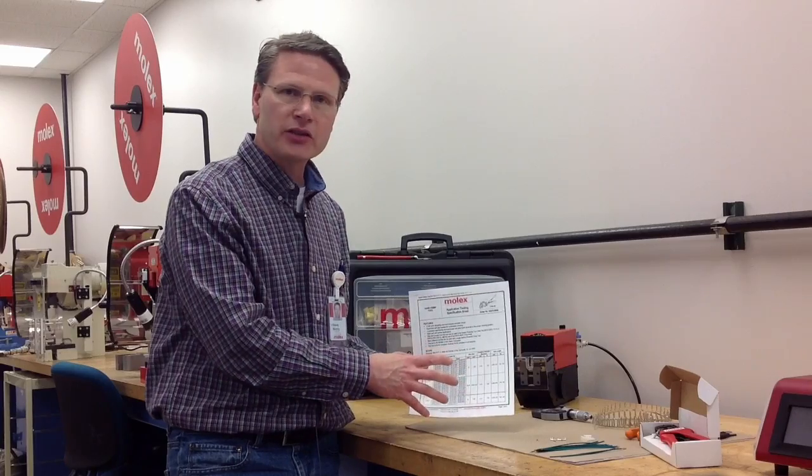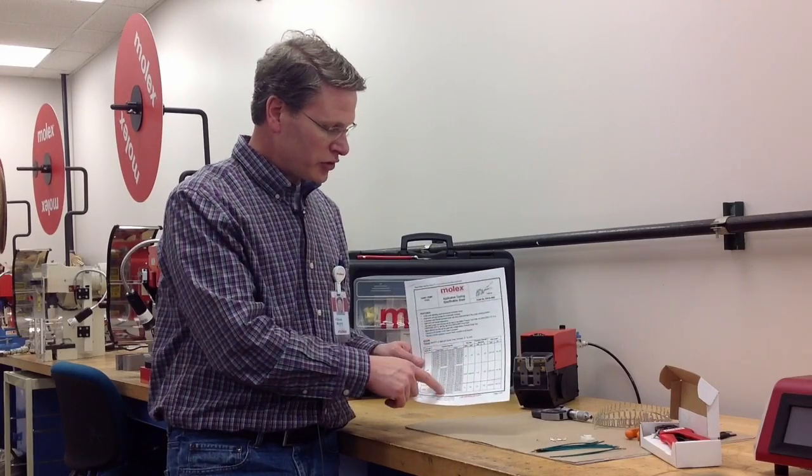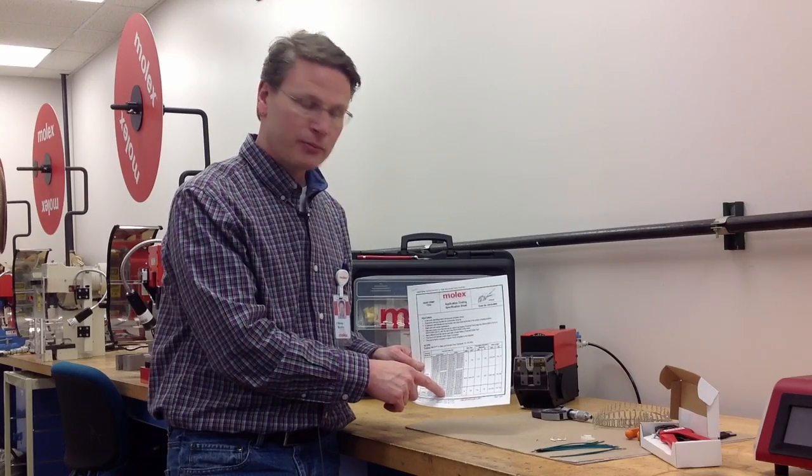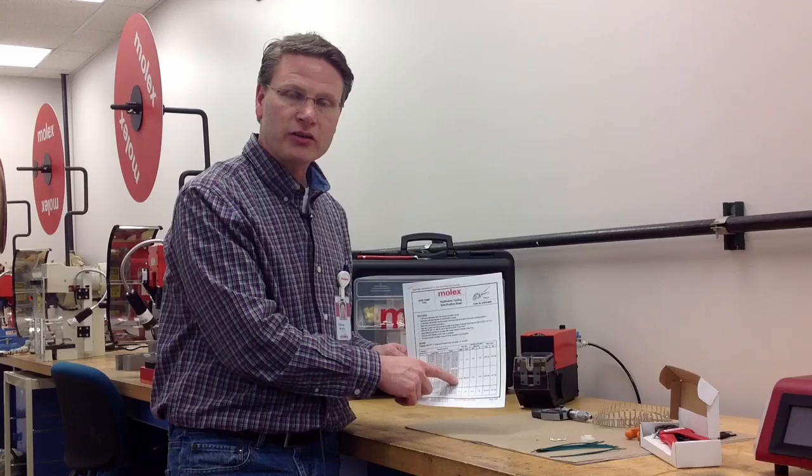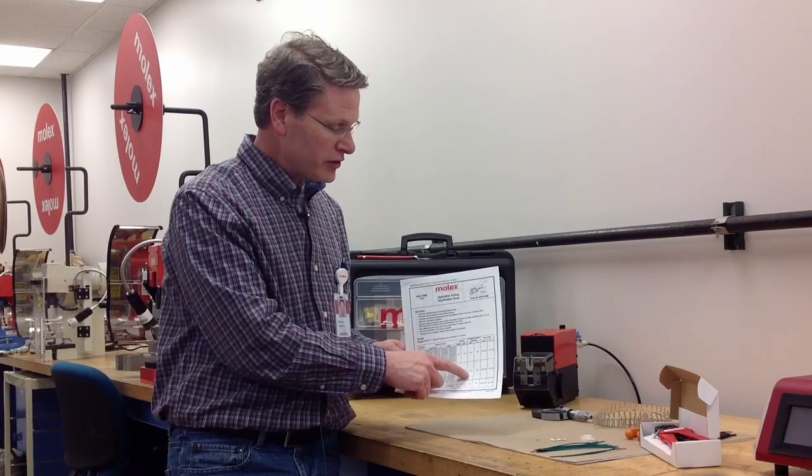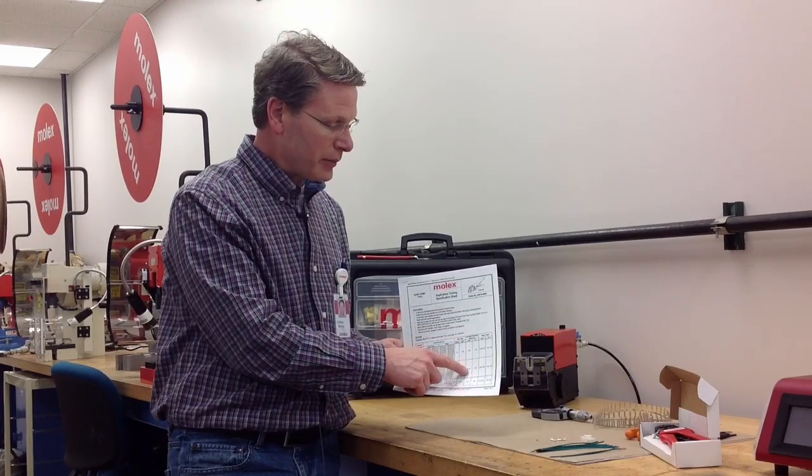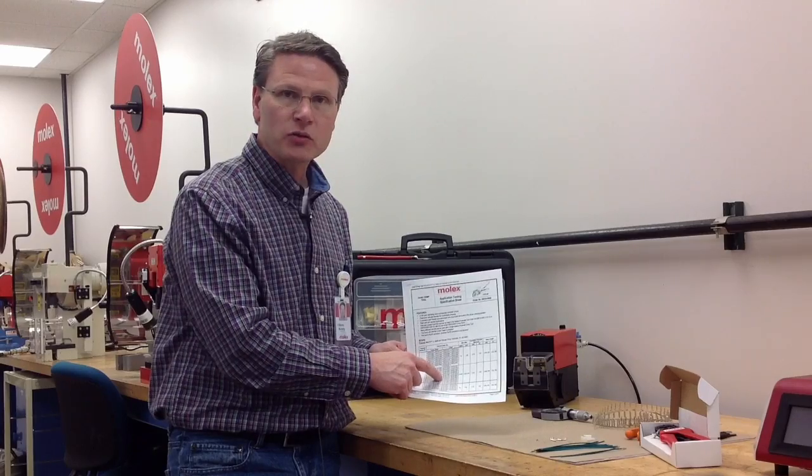And each hand tool has a specification sheet shown here. In that specification sheet, you should be able to find the terminal that you want to crimp. It lists the wire gauge range in which that terminal will accept, and it'll also list the insulation diameter that the terminal will accept as well.